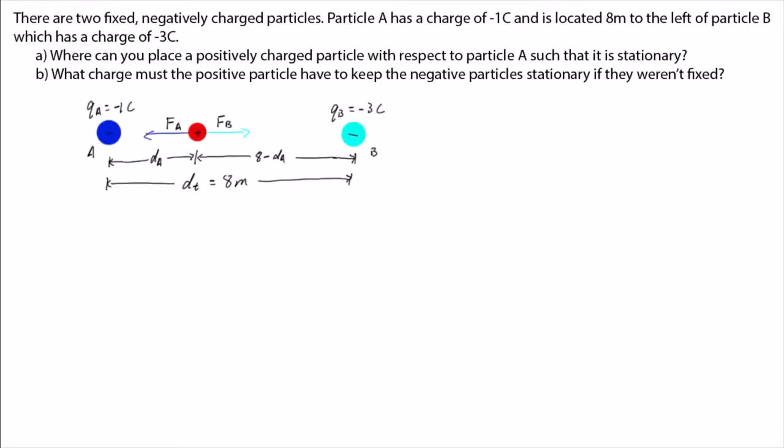Part B has the same setup as part A, so we'll use the same diagram, except now we know the distance between the particles. We want to find the charge of the positive particle, so we want to find QP.